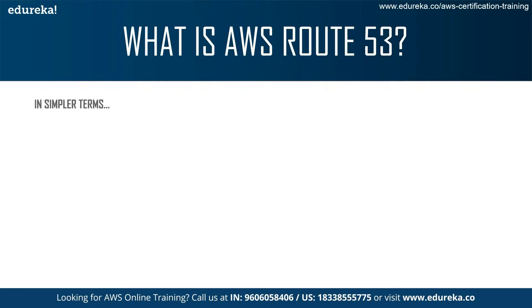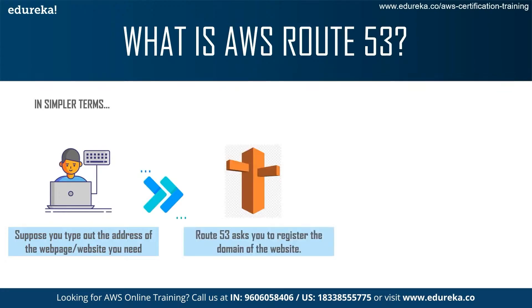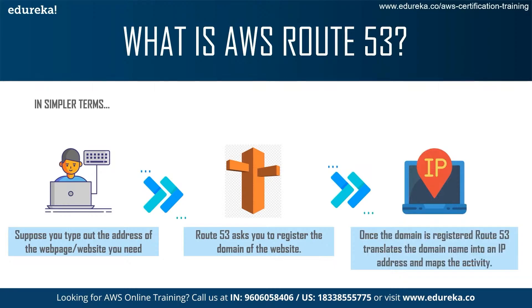In simpler terms, suppose you type out the address of the web page that you need. What Route 53 does is ask you to register the domain of the website. And once you do that, Route 53 translates the domain name into an elastic IP address which can be accessed by the public.